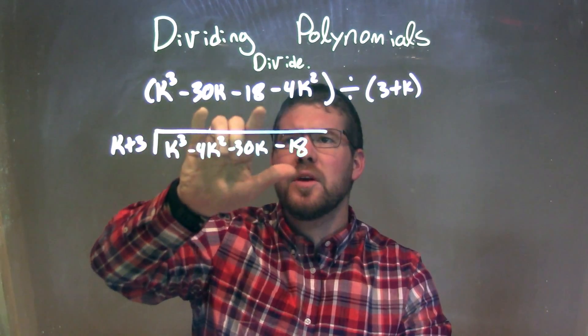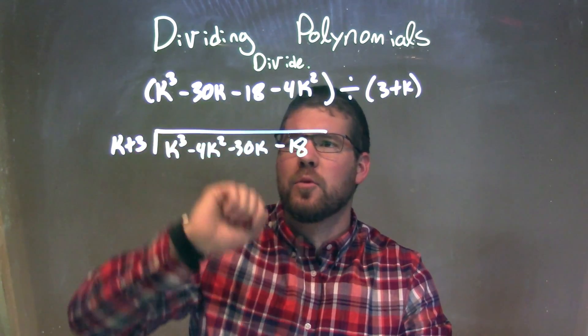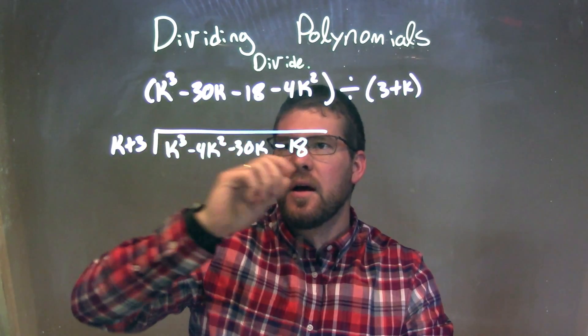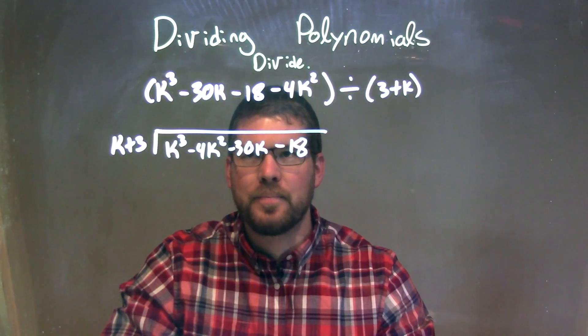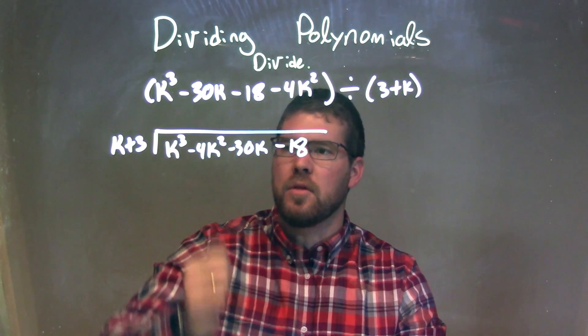So I'm going to make sure it's rearranged, put my highest degree first, put that minus 4k basically before the minus 30k and after the k to the third power. So now I have this long division.